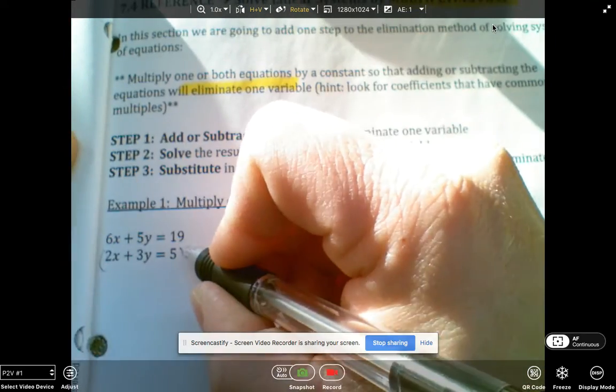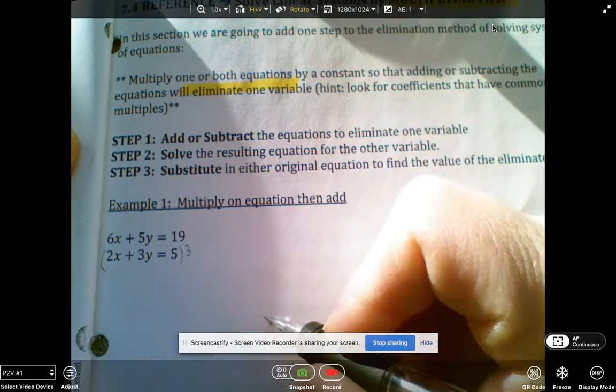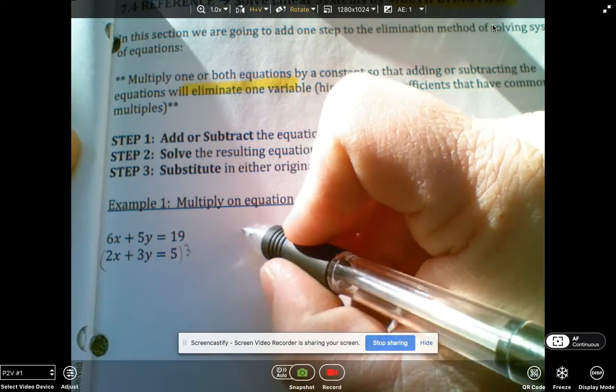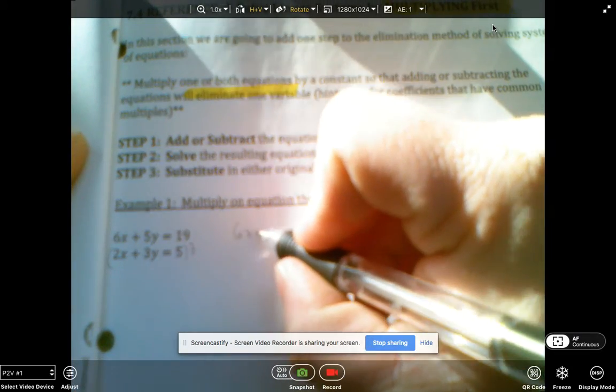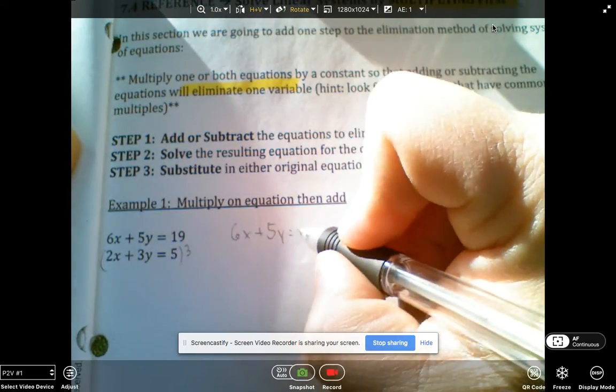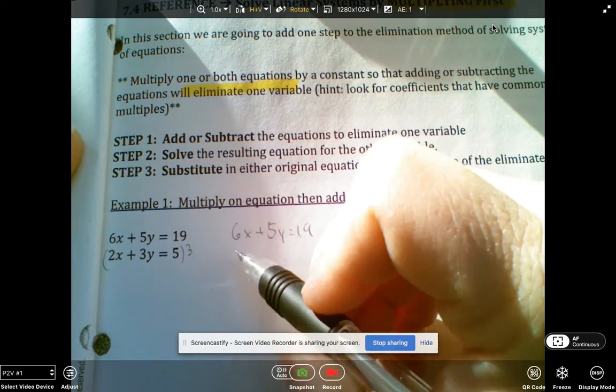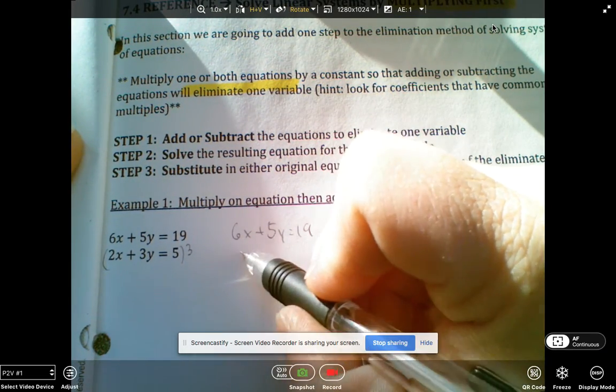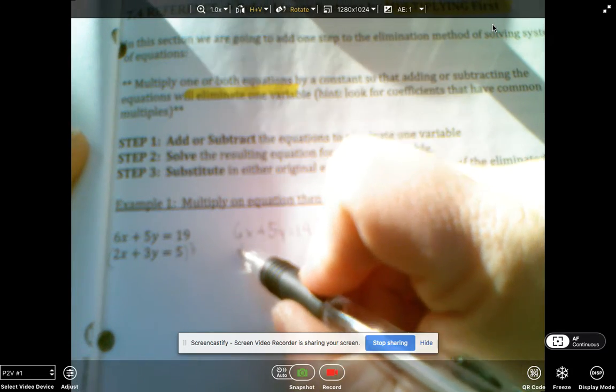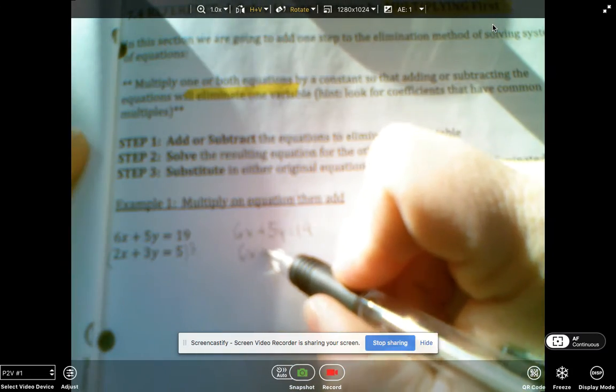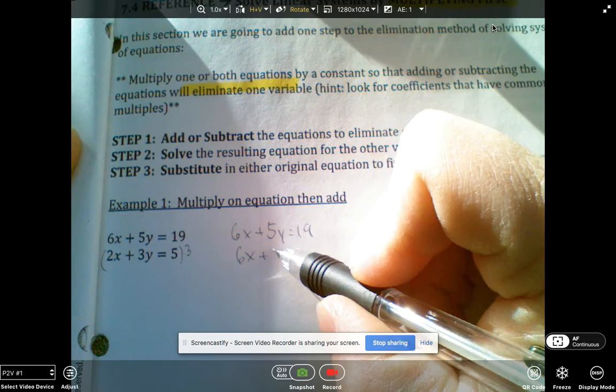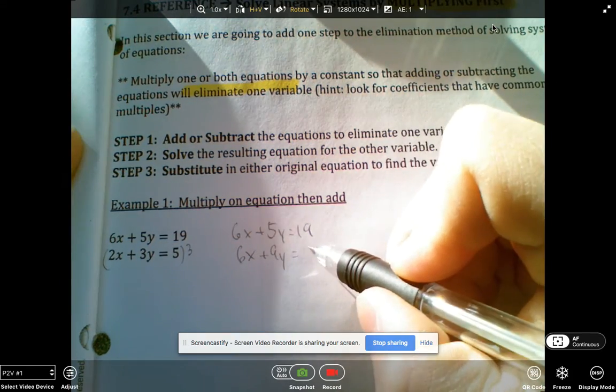I'm going to put the whole thing in parentheses and a 3 on the outside. So I'll rewrite the first one, 6x plus 5y is 19. And then here I'll multiply this by 3. That will become 6x plus 9y equals 15.